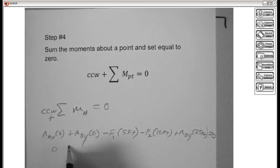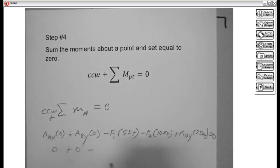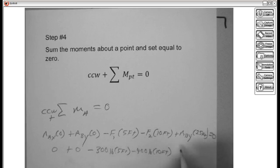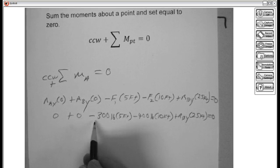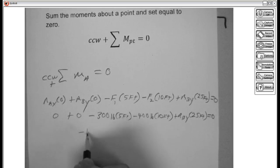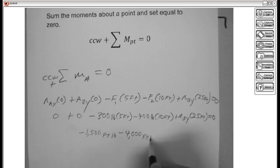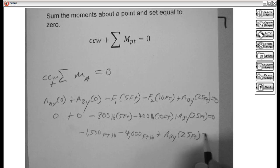This is 0 plus 0. Let's go ahead and plug in my forces in there. That is 300 pounds times 5 feet, minus 400 pounds times 10 feet, plus RBY times 25 feet, equal to 0. I'm multiplying out. I get a negative 1,500 foot-pounds. I get a negative 4,000 foot-pounds, plus RBY times 25 feet, that equal to 0.